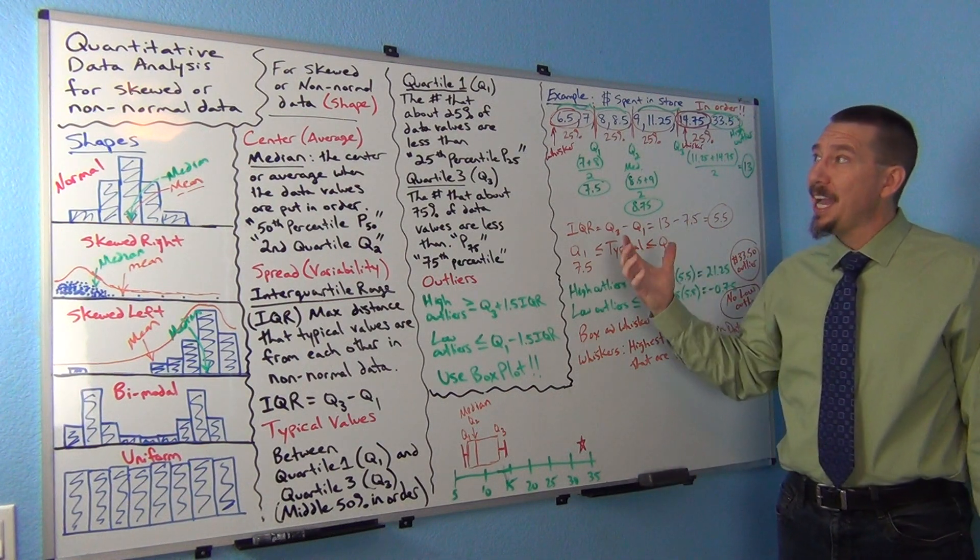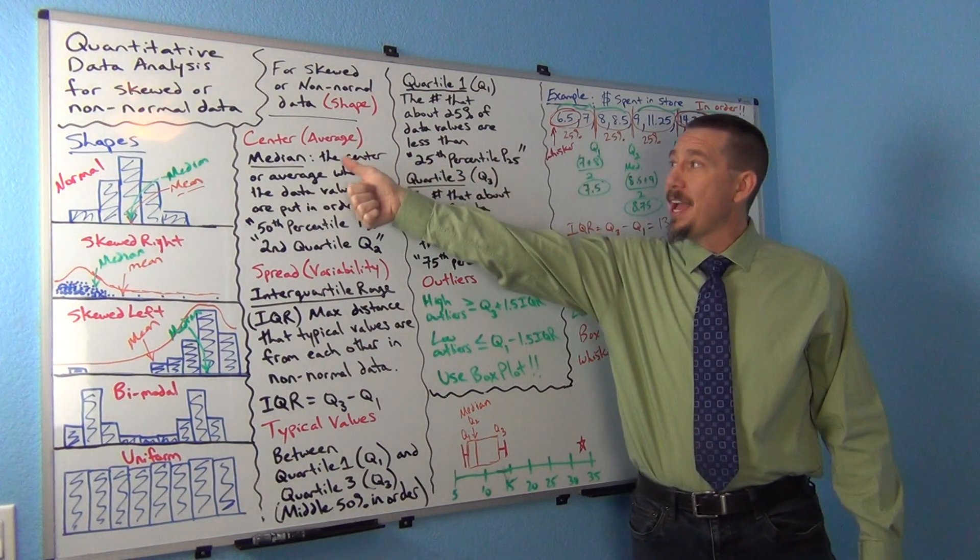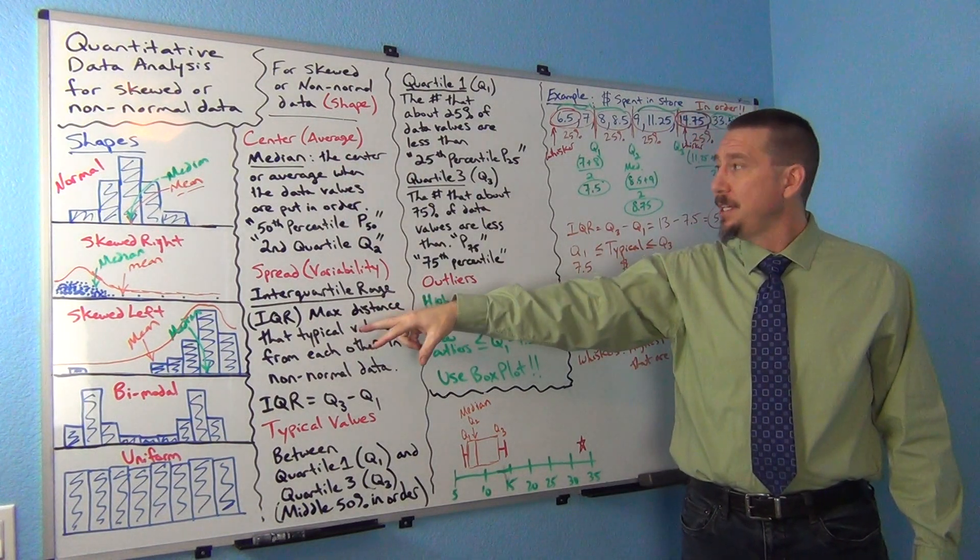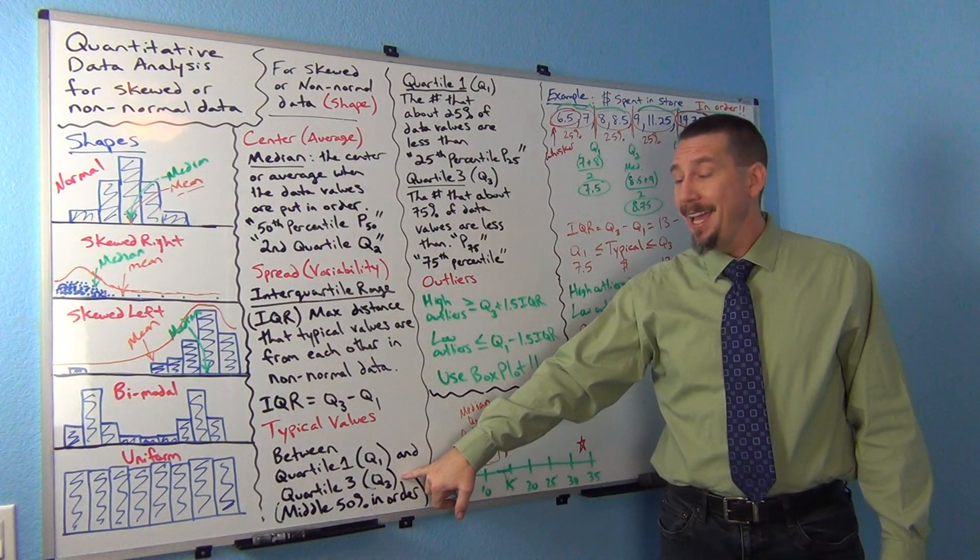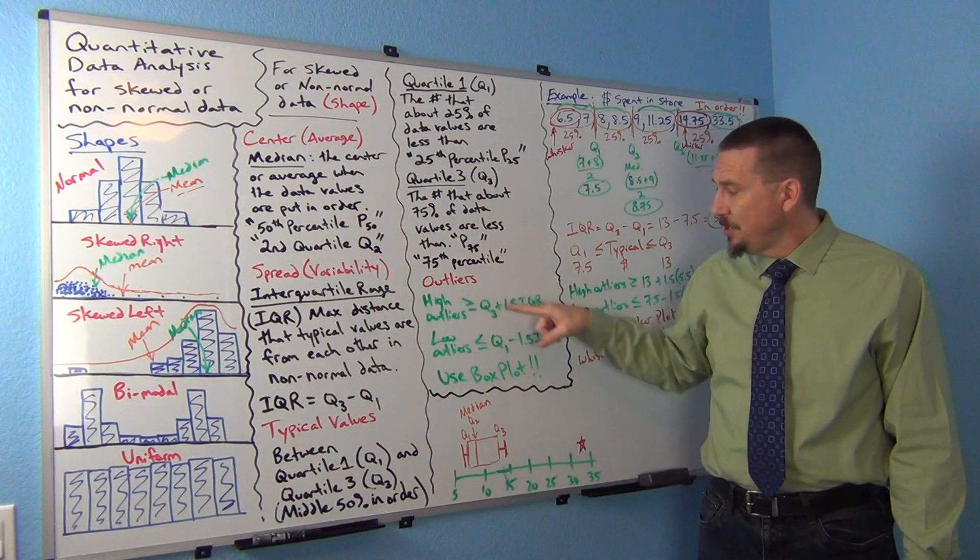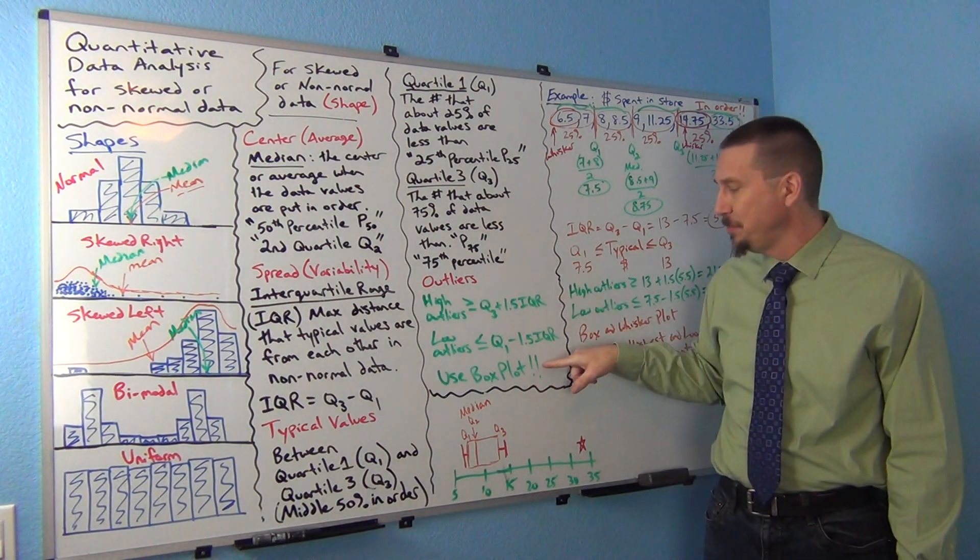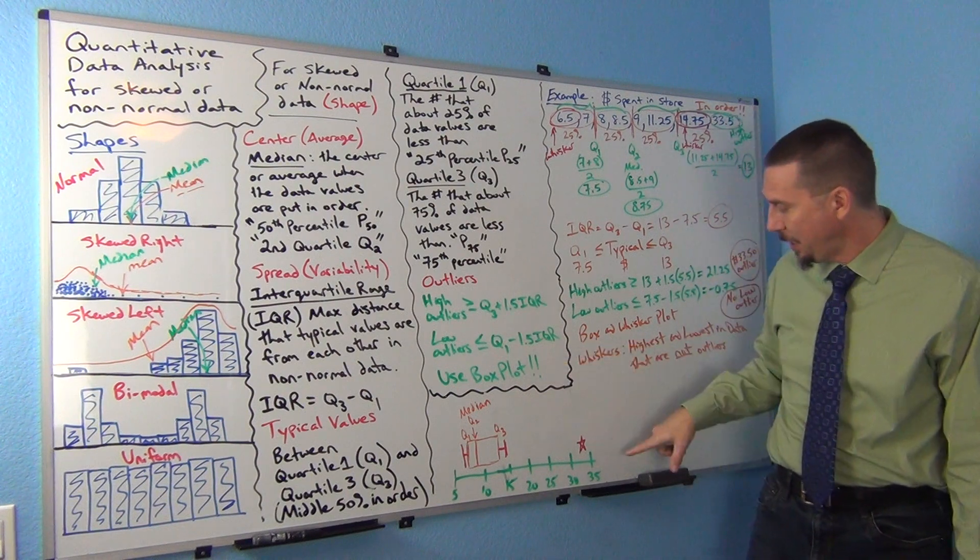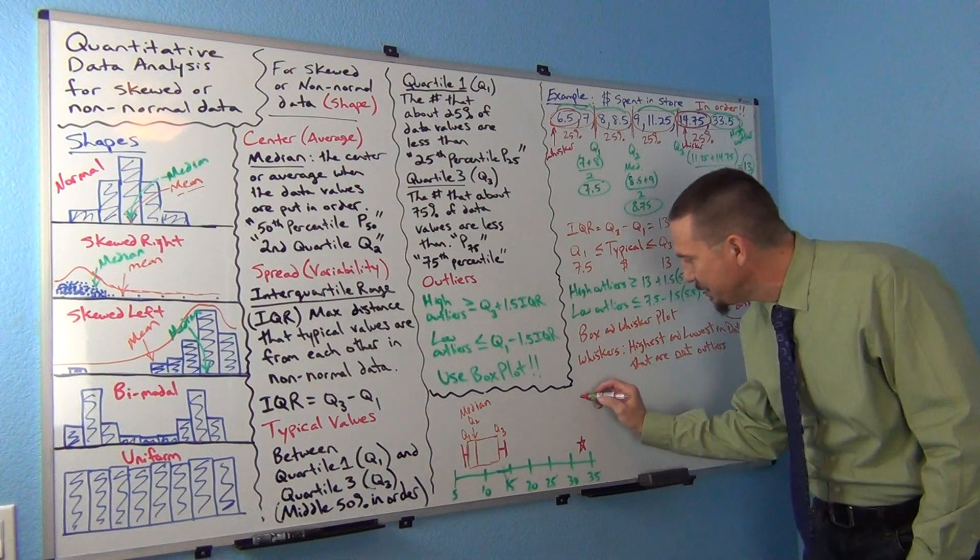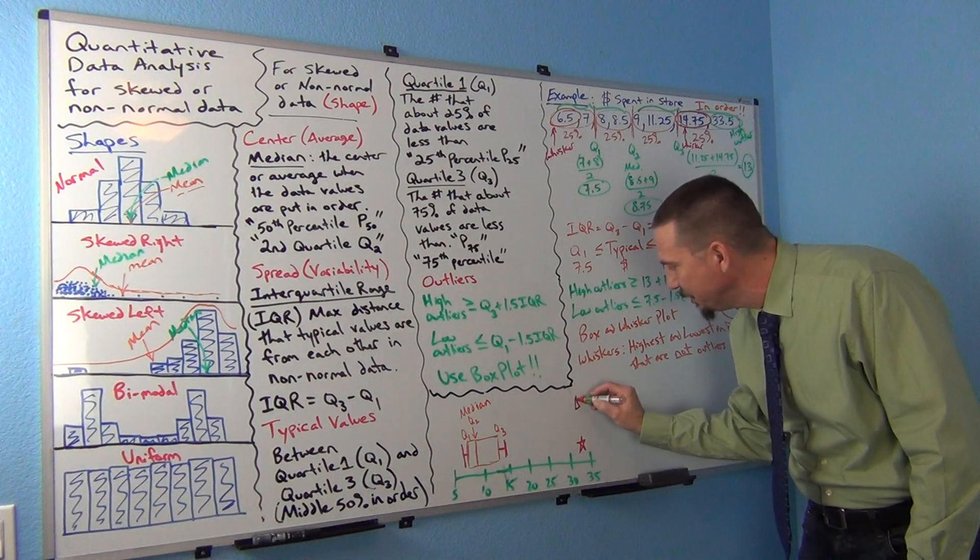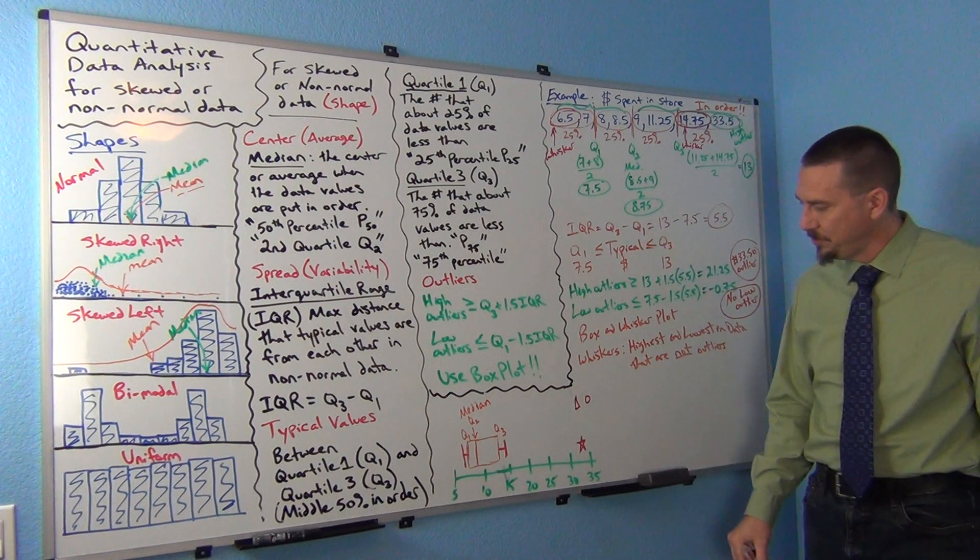Okay, so let's recap. So for non-normal or skewed data, we want to use the median as our average. IQR is our spread. Typical values are going to be between quartile 1 and quartile 3. And to find outliers, just have the computer make a box plot. You actually don't have to calculate these yourself. The computer does it automatically. Just have the computer make a box plot, and then just look for these little stars or these little triangles or little circles. You know, that means these are all symbols for outliers.